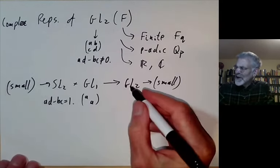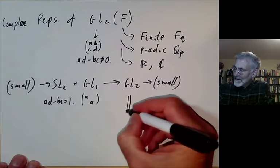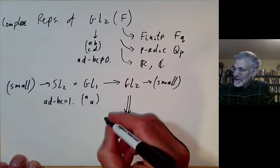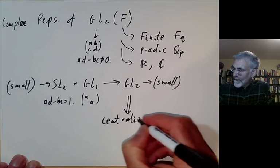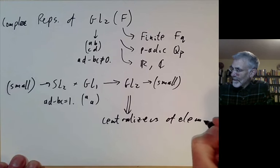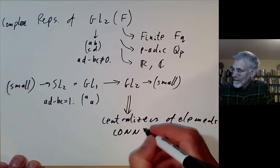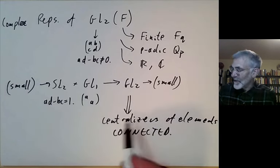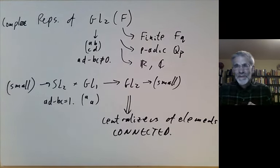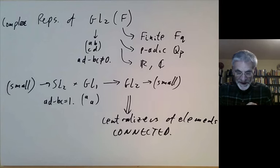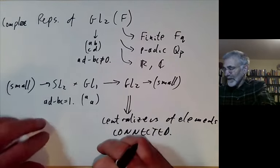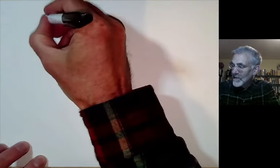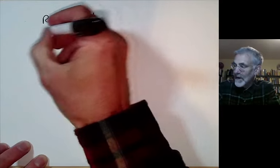The reason GL2 is better than SL2 seems to be that for the algebraic group GL2, the centralisers of elements are connected. For slightly complicated reasons, if you have an algebraic group with this property its representation theory tends to be a little bit easier than in general, whereas for SL2 the centralisers aren't necessarily connected.